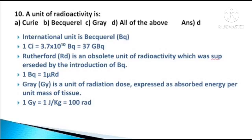A unit of radioactivity is — options: Curie, Becquerel, Gray, or all of the above. The answer is option D. The SI unit is Becquerel. 1 Curie is equal to 3.7 × 10^10 Becquerel. Gray is the unit of radiation dose.